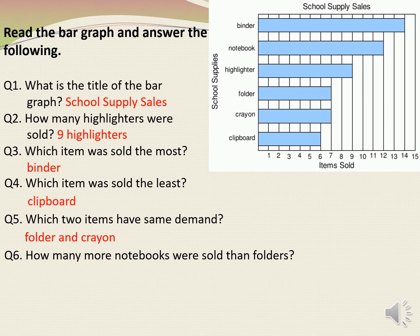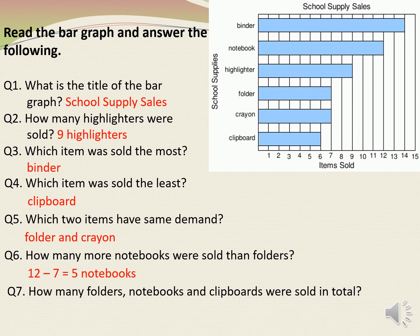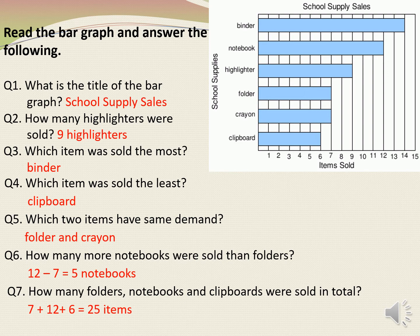Here we are comparing, so we are going to do subtraction. The number of notebooks sold were 12 and the number of folders sold were 7. Therefore, 12 minus 7 is equal to 5 notebooks. Next question: how many folders, notebooks and clipboards were sold in total? In total means to add. So we are going to add the number of folders, notebooks and clipboards. The number of folders is 7, notebooks is 12 and clipboards is 6. So 7 plus 12 plus 6 is equal to 25 items.